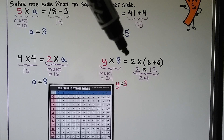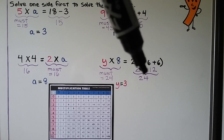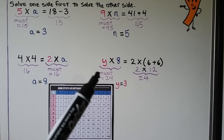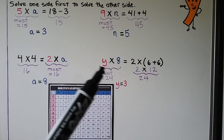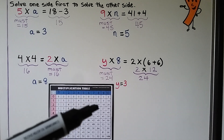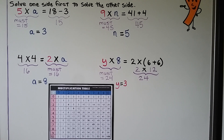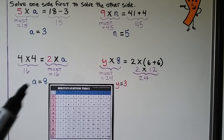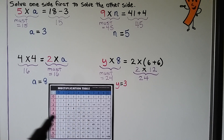Next: y times 8 is equal to 2 times 6 plus 6. We solve the right side first: 6 plus 6 is 12, so 2 times 12 equals 24. This side must equal 24. Going to the column for 8 down to 24, then across to the row, we see it's at 3. So y is equal to 3. We can find the product in the multiplication table by following a column or row to see what other number makes that product.